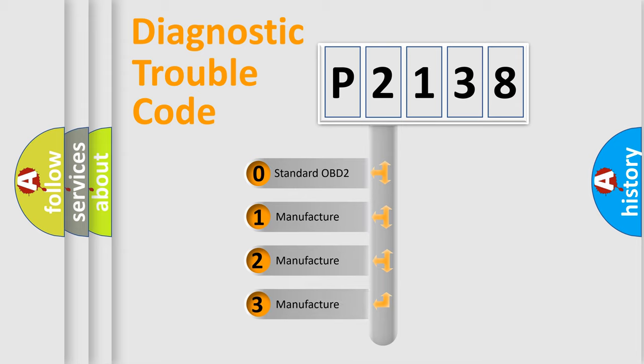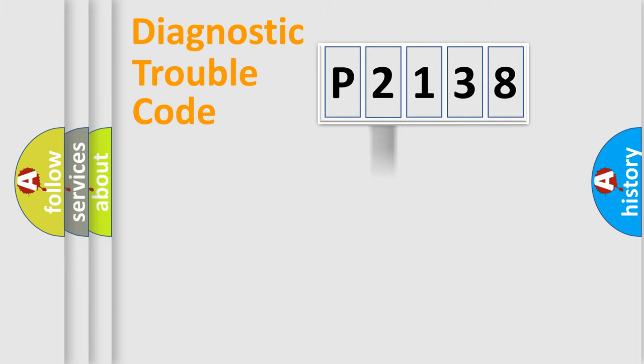If the second character is expressed as zero, it is a standardized error. In the case of numbers 1, 2, or 3, it is a manufacturer-specific expression of the car-specific error.